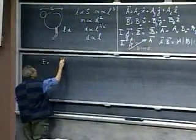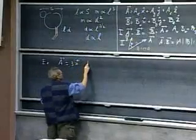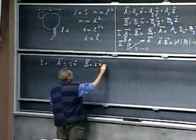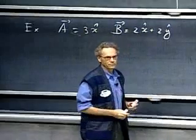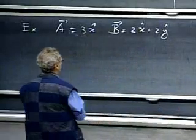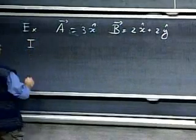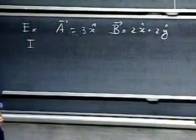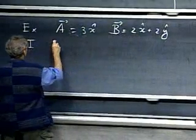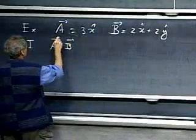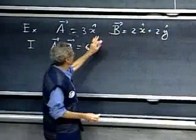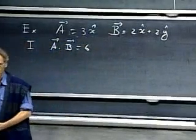Suppose A equals 3X and B equals 2X plus 2Y. And I'm asking you, what is the dot product? Well, you could use method number one, which in this case is by far the fastest, believe me. AX is 3 and BX is 2, so that gives me a 6. There is no AY, there is no AZ, so that's the answer. It's just six. That's the dot product.